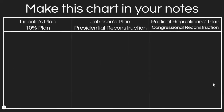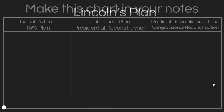Pause this video and make a chart in your notes to keep track of the three different plans for Reconstruction we're going to look at. The first is Lincoln's plan, the second is Johnson's plan — known as Presidential Reconstruction — and finally we'll look at Congressional Reconstruction, which is the plan of the Radical Republicans.